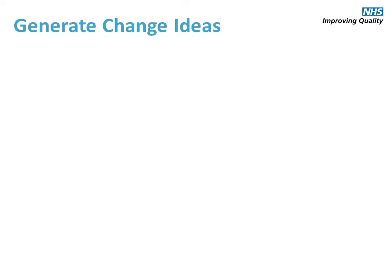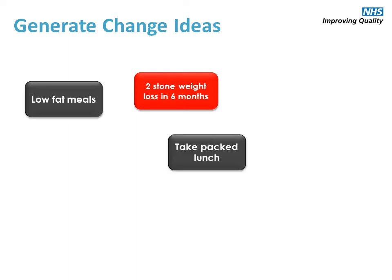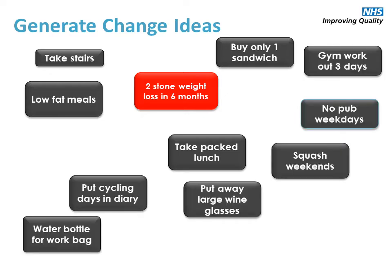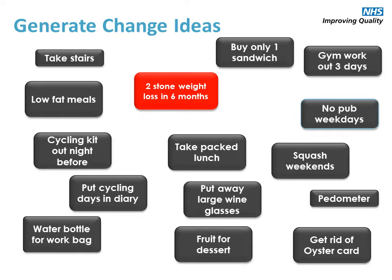The next step is to generate our change ideas. To help this gentleman achieve a two-stone weight loss in six months, there are lots of different things we might try — and these are our change ideas. These are essentially all the different things you might try to help achieve your aim. They're discrete projects, but essentially all can be viewed as hypotheses to be tested to help you achieve your aim.